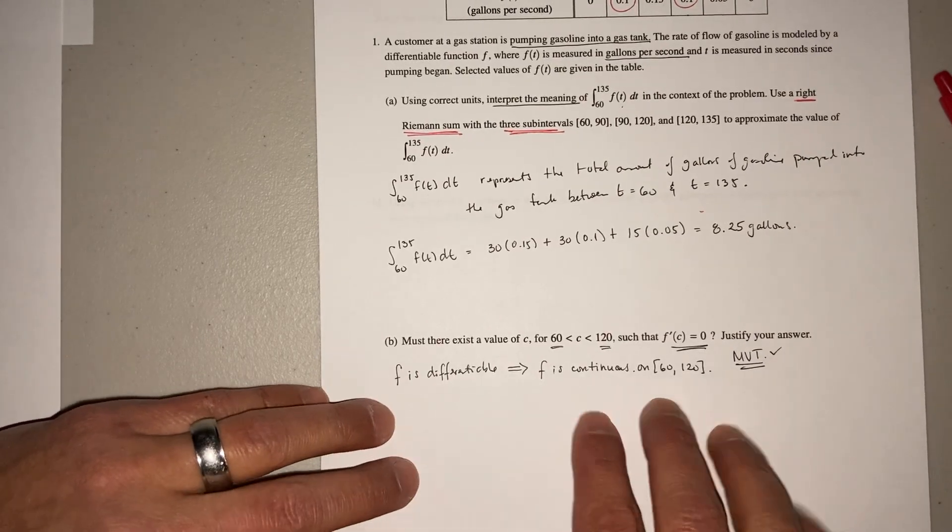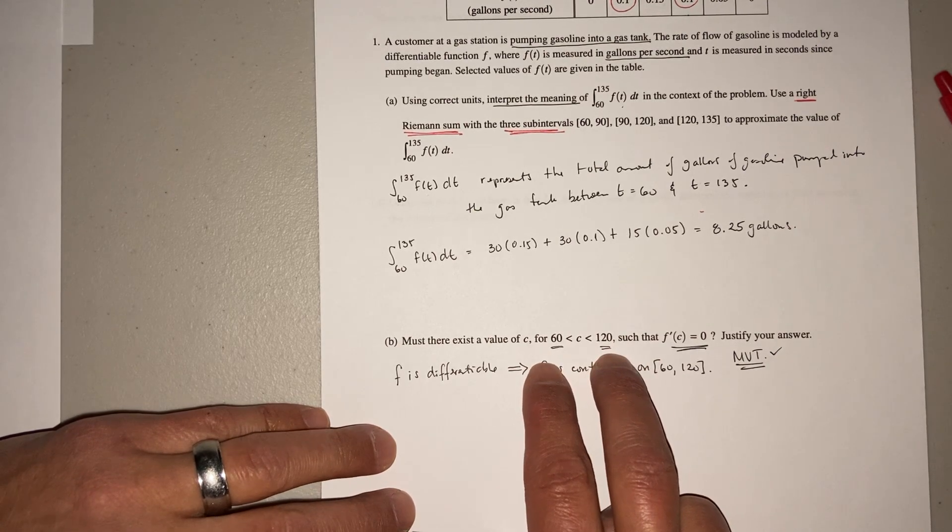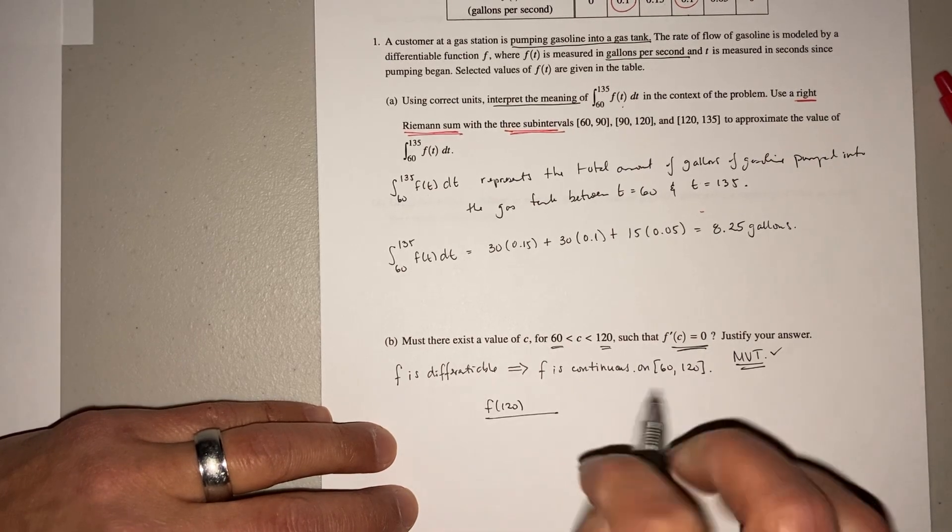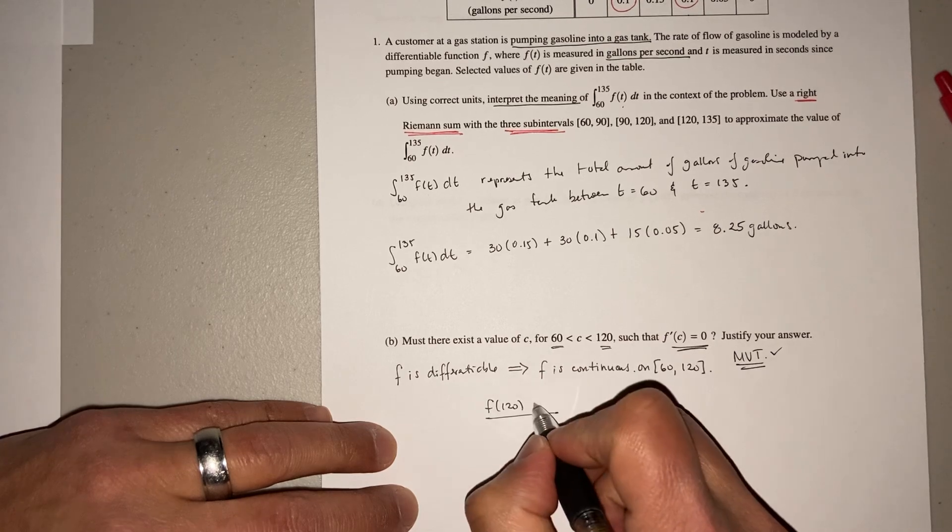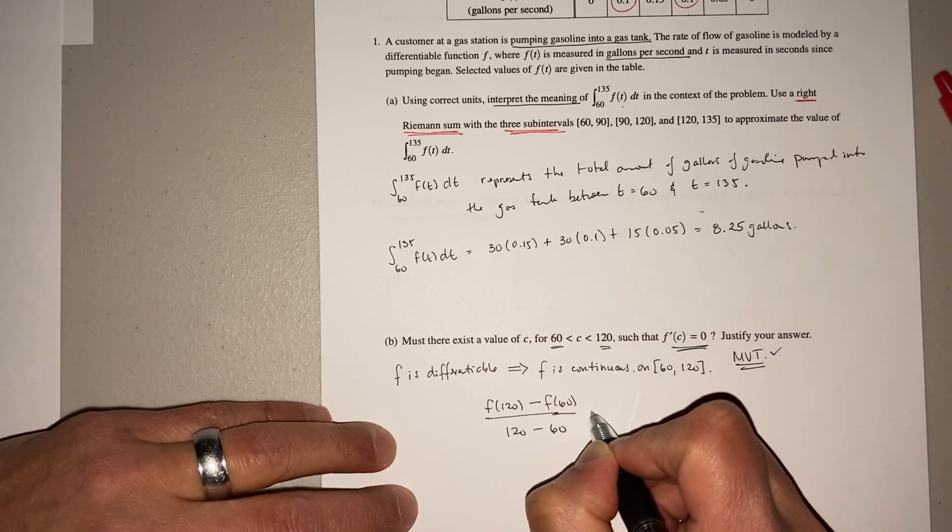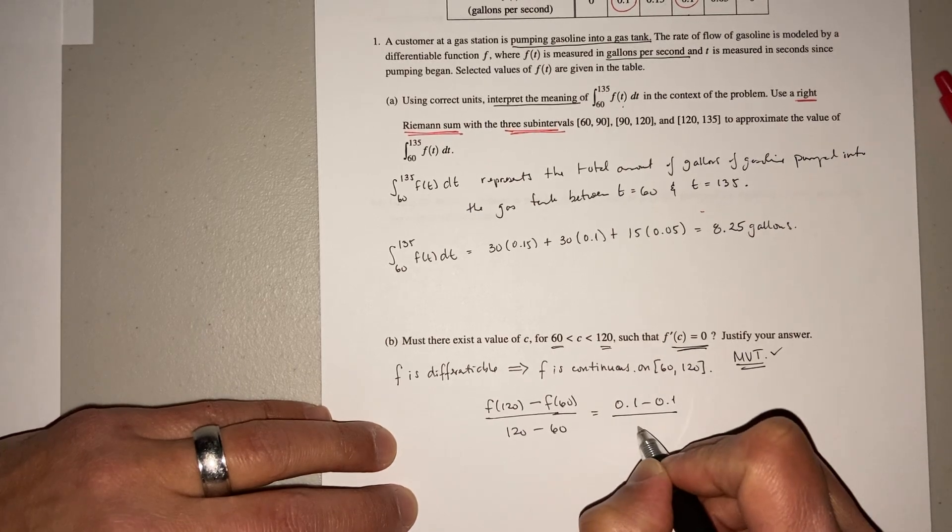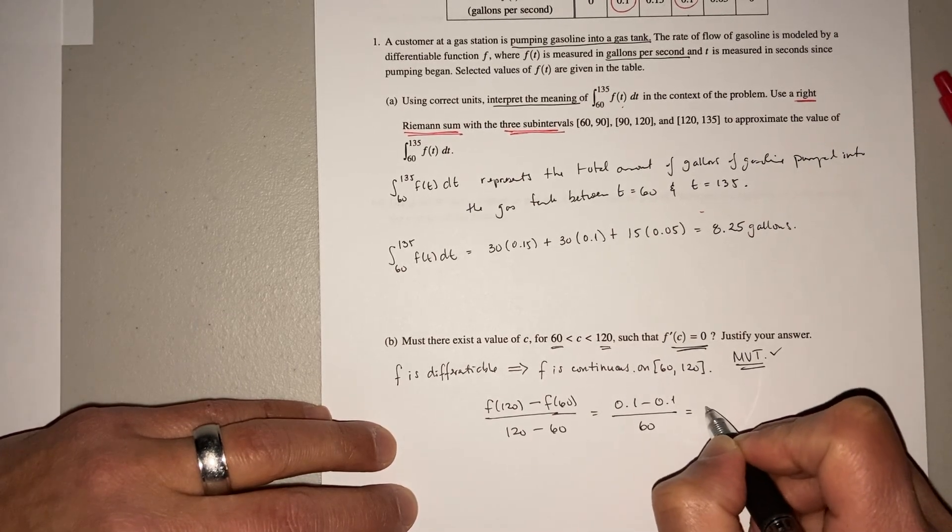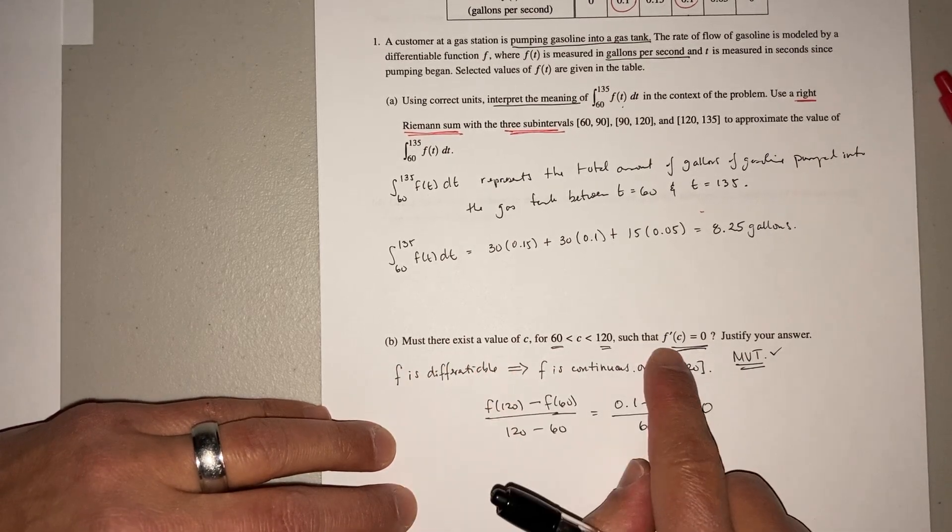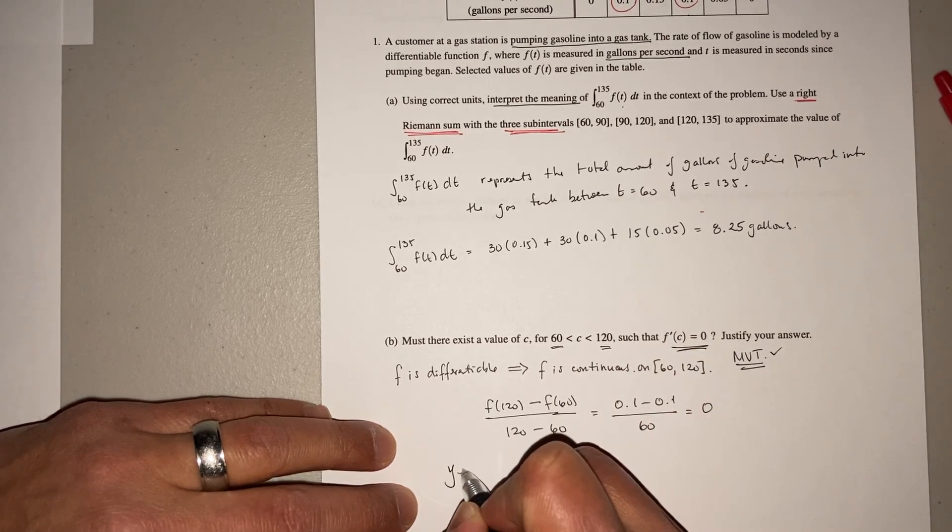So now that we have that, let's go ahead and apply our basically our rate of change. So it's your slope formula. So you're basically F of 120, you're using these values here, minus F of 60, minus F of 60, all over 120 minus 60. And that's going to give you 0.1 minus 0.1 over, what is that, 60? Either way, you get zero. So must there exist a value such that F prime of C equals zero? The answer is yes.